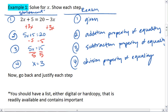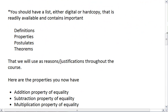This is a good time to make sure that you have a list, either digital or hard copy, that is readily available and contains some important definitions, properties, postulates, and theorems. We'll use this list as reasons or justifications throughout the course. Here are some properties that you now have.